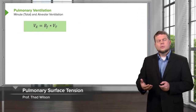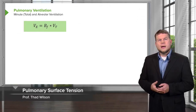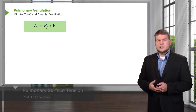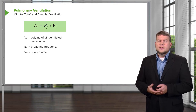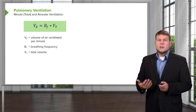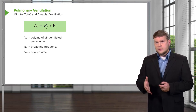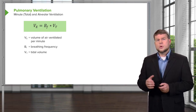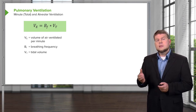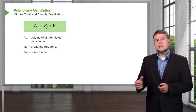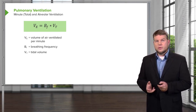Now let's talk through the different amounts of ventilation that a person has. The classic formula for ventilation — this is minute ventilation or total ventilation — is simply taking the breathing frequency times the tidal volume.